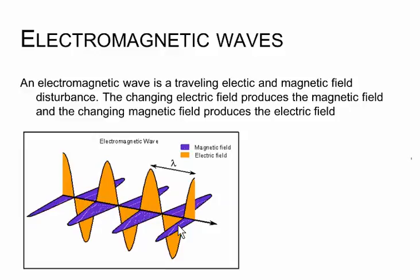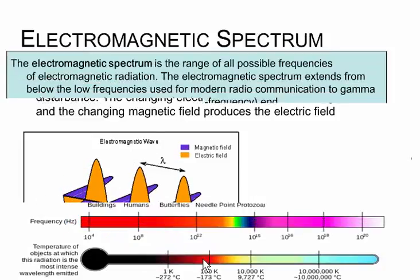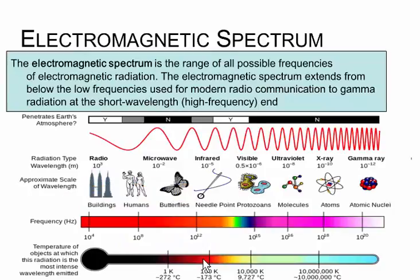The waves are at right angles to each other, so what we're trying to see here is an orange sine wave in the vertical direction and a purple magnetic sine wave in the horizontal direction. The frequency of those waves determines their propagation properties.